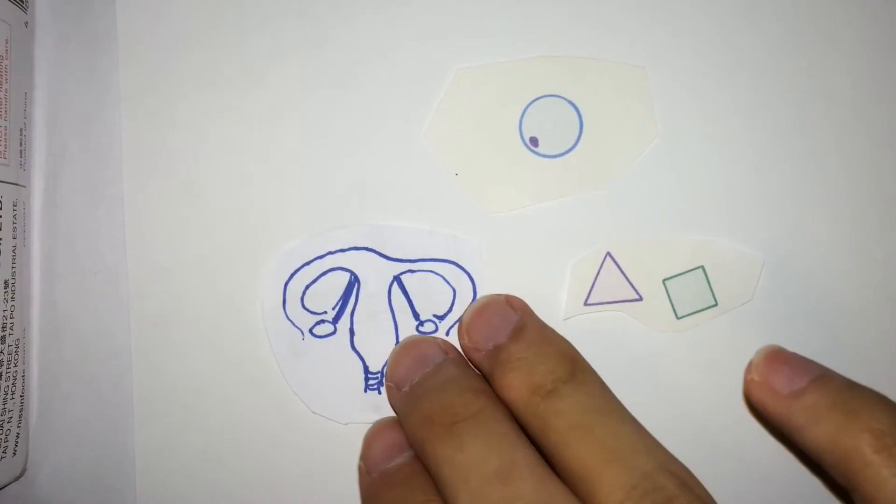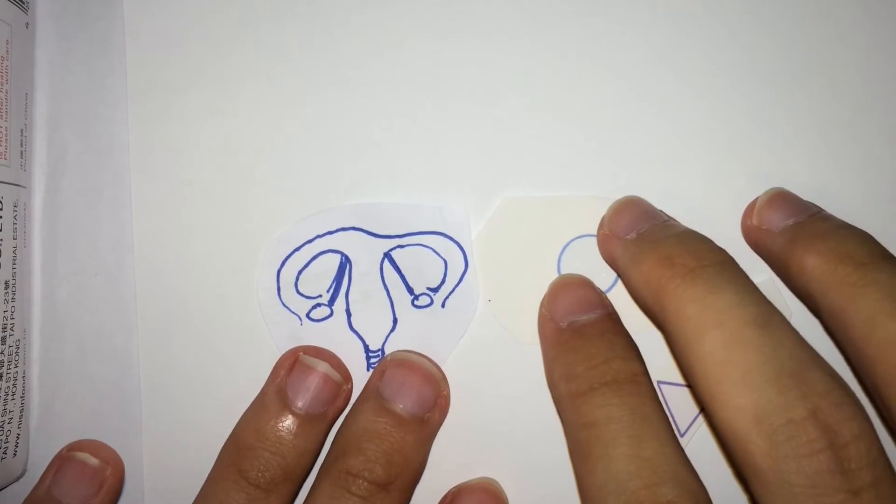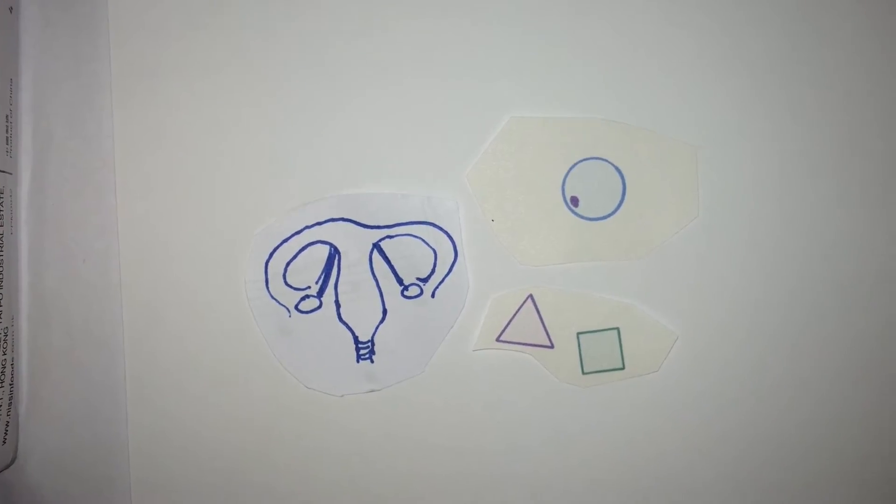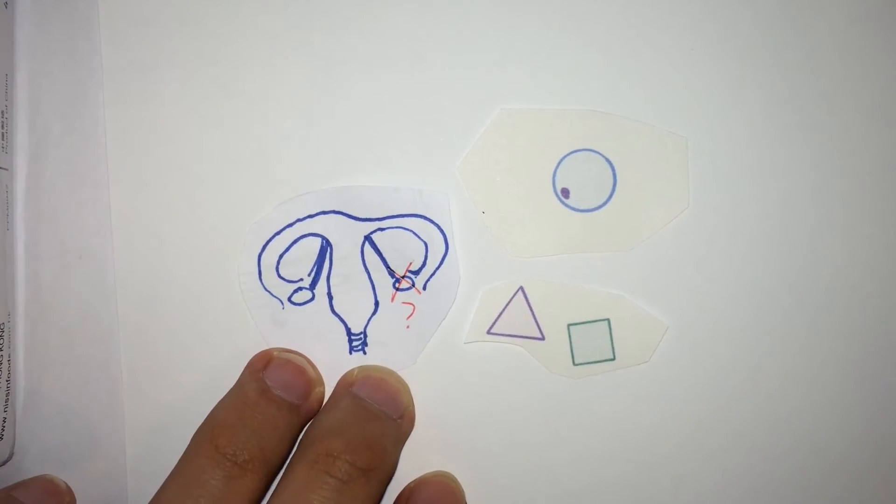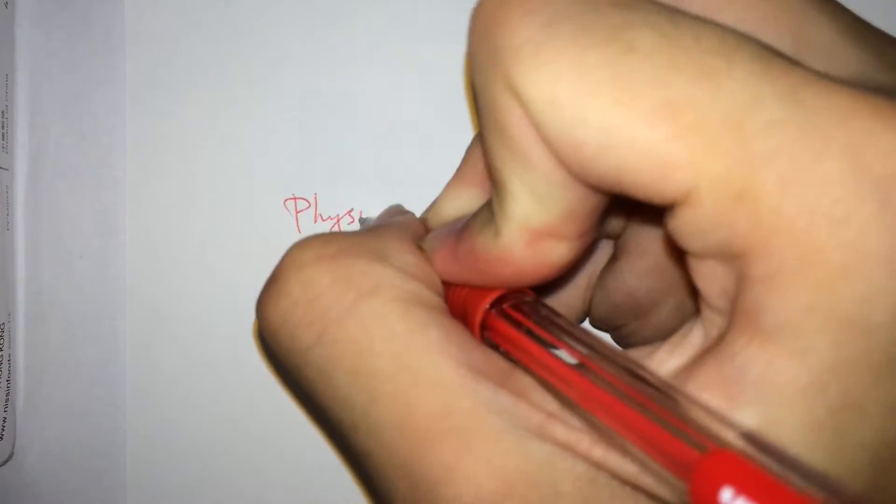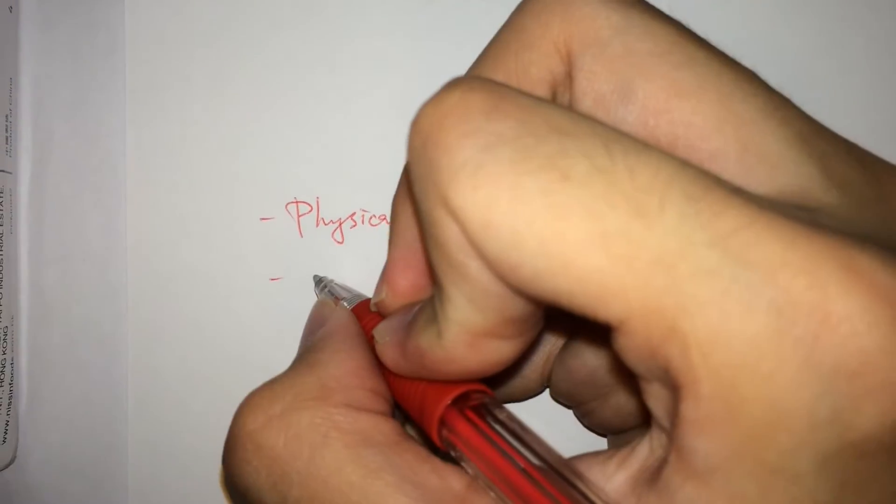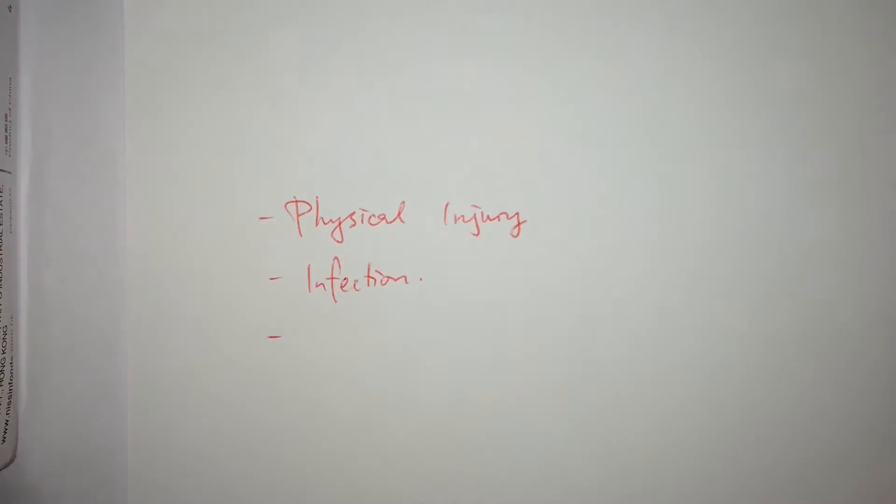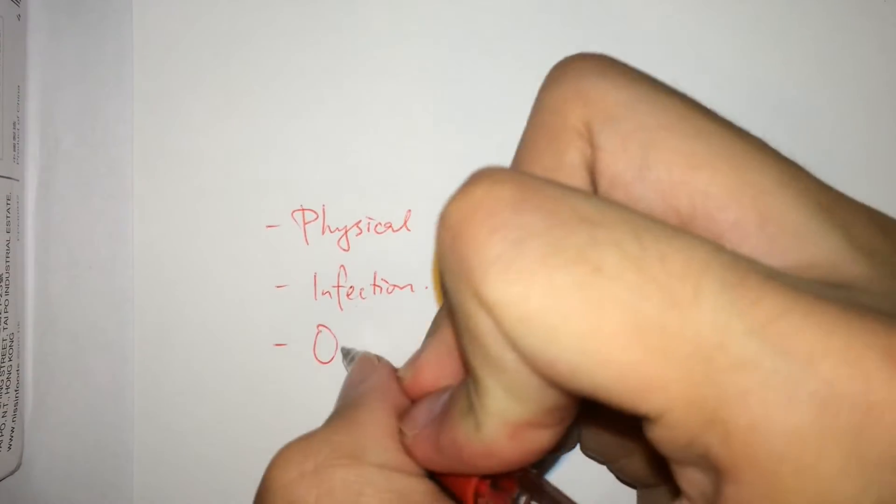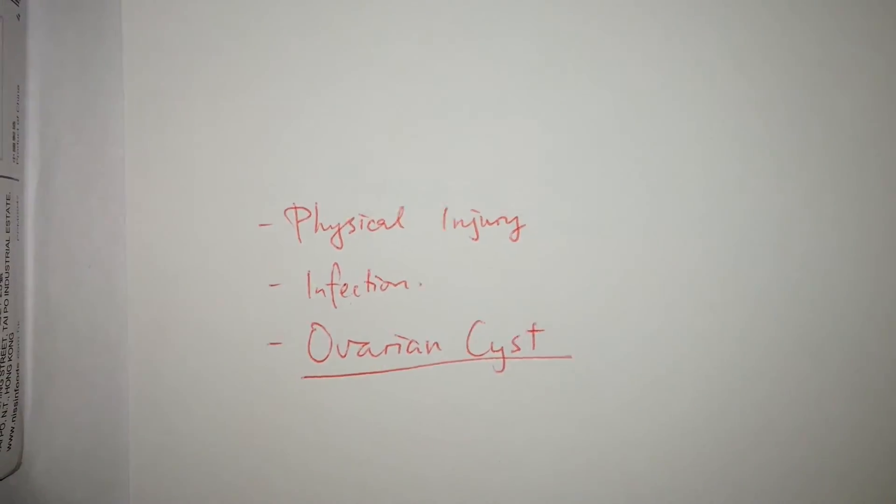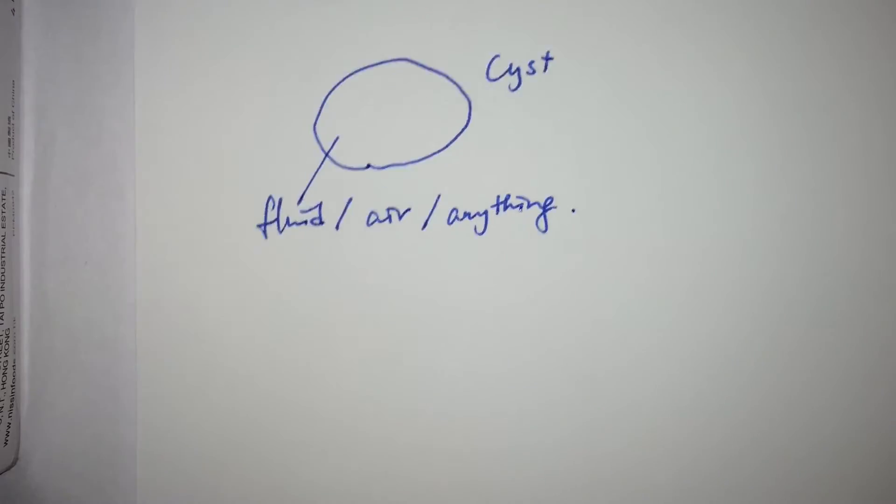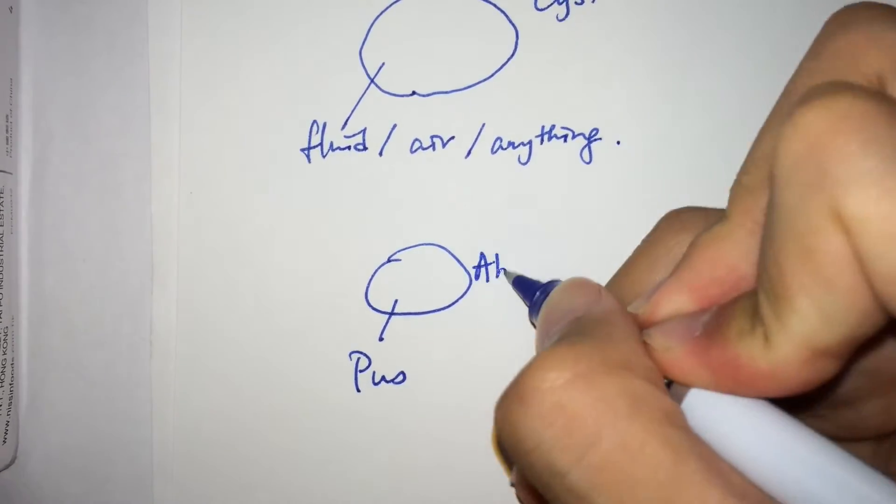So we know that in normal situations, ovaries release eggs and produce sex hormones. What if one of them is disabled? There are many mechanisms that can cause ovaries to fail and be disabled, like physical injury or rarer occasions like infection. The most common reason is due to the formation of ovarian cysts, which means a closed sac that contains fluid, air, or anything but pus within it, because we call a pus-containing sac an abscess.